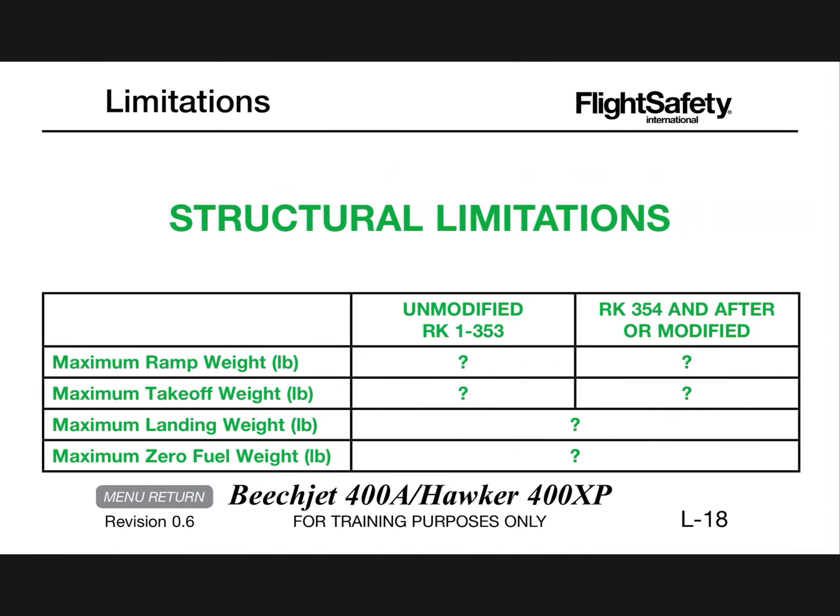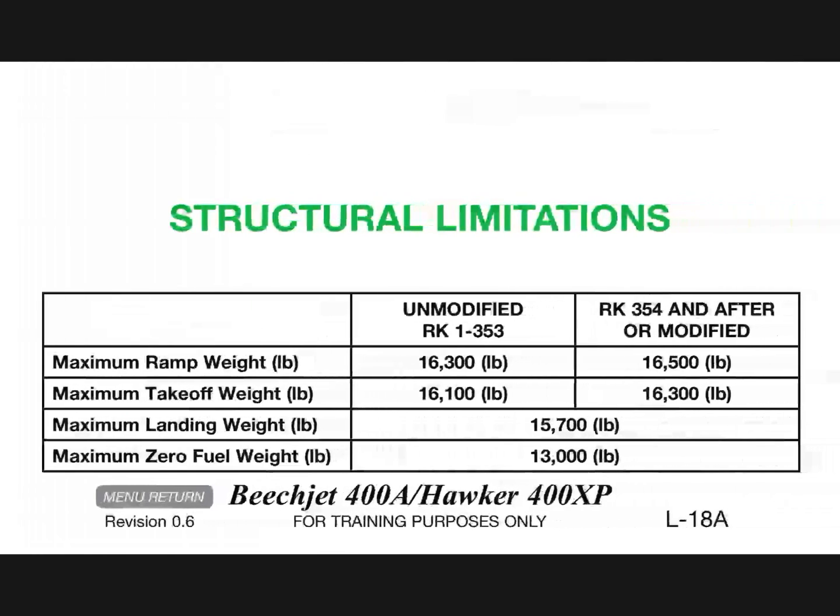Structural limitations — maximum ramp weight: unmodified Beechjet is 16,300 pounds, modified increased mod is 16,500 pounds. Maximum takeoff weight: 16,100 unmodified, 16,300 modified. Maximum landing weight 15,700 pounds. Maximum zero fuel weight is 13,000 pounds.